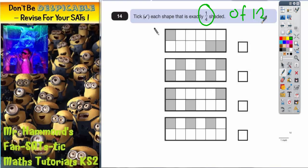Well a quarter of 12 squares, to find a quarter of anything you halve it and halve it again. So half of 12 is 6 squares, half of it again is 3 squares.